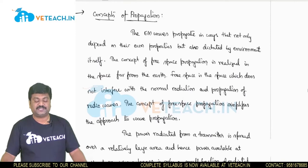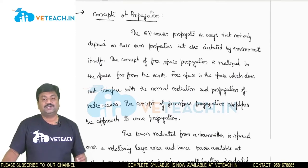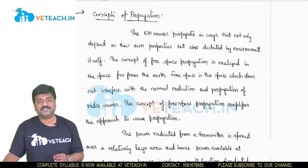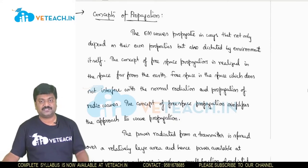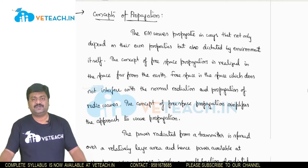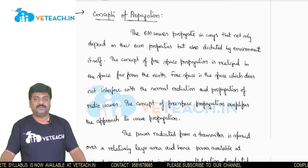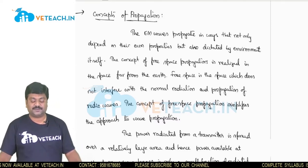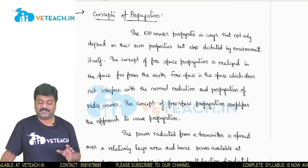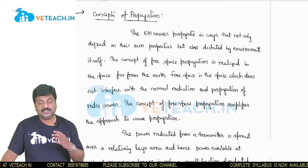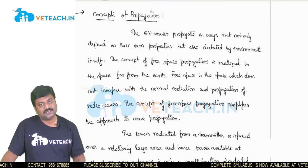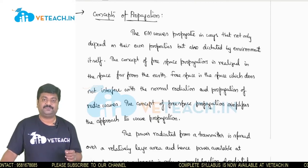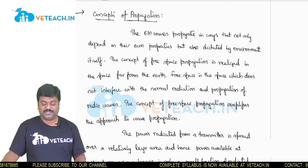The first thing is we need to know about the basic concept of propagation. Propagation always depends not only on its own properties but also on environmental conditions. Everyone knows that simply propagation cannot happen, so environmental effects also need to be considered. Free space propagation is always realized in space which is far from the earth itself, and which does not have any interferences with the radio wave propagation.